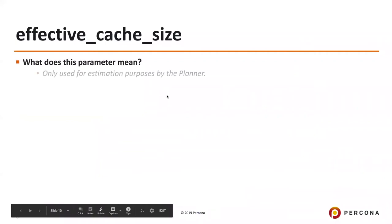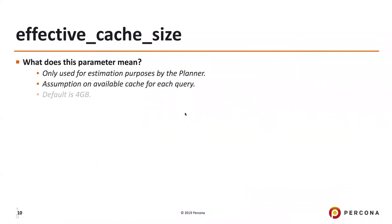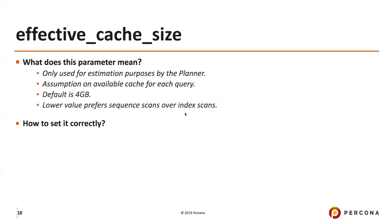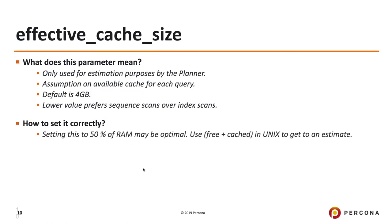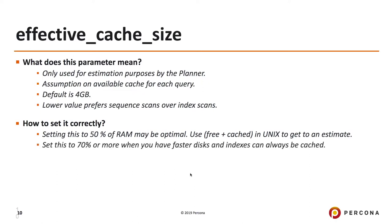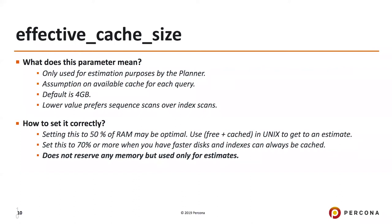Effective_cache_size is a parameter used only for estimation purposes by the planner. It's an assumption about the available cache for each query. The default is 4GB. When set to such a low value, the optimizer automatically prefers sequential scans over index scans. If you have faster disks and indexes are always cached, you could set it to 70% or more. Do remember it does not reserve any memory — you're just telling the optimizer how much RAM is available for caching. There is no harm in increasing this to a bigger percentage.